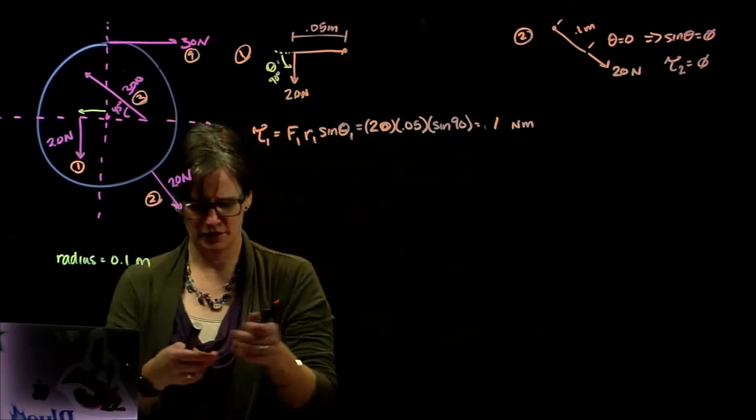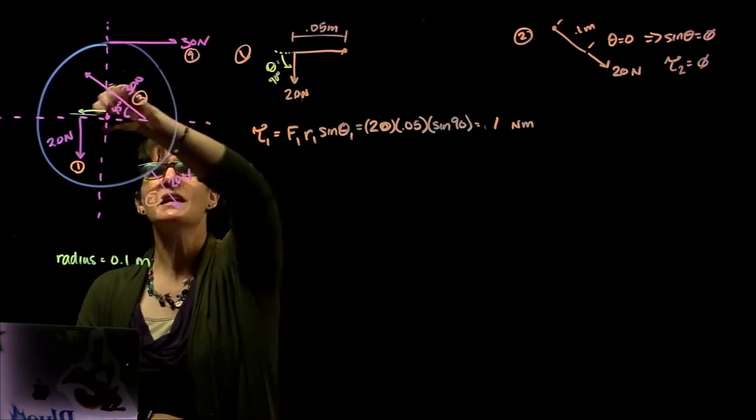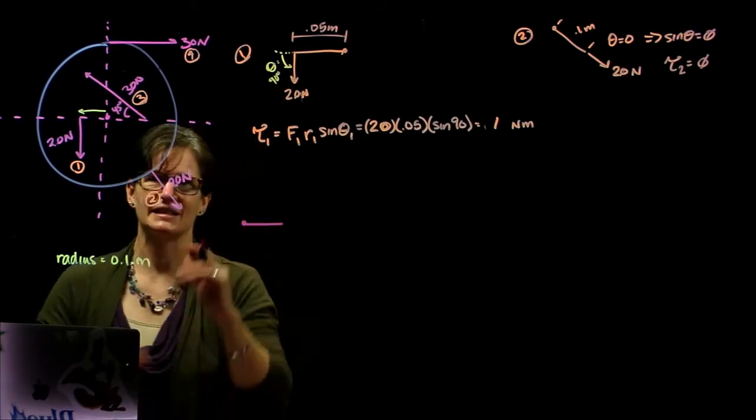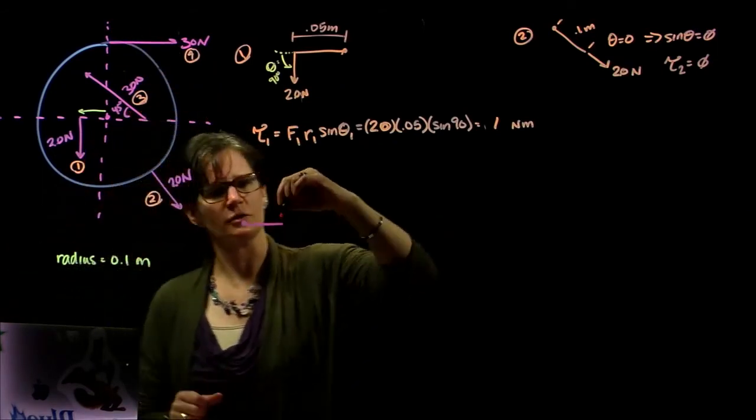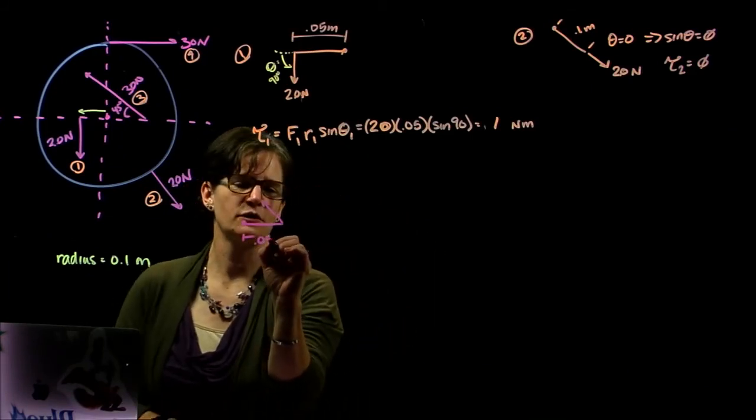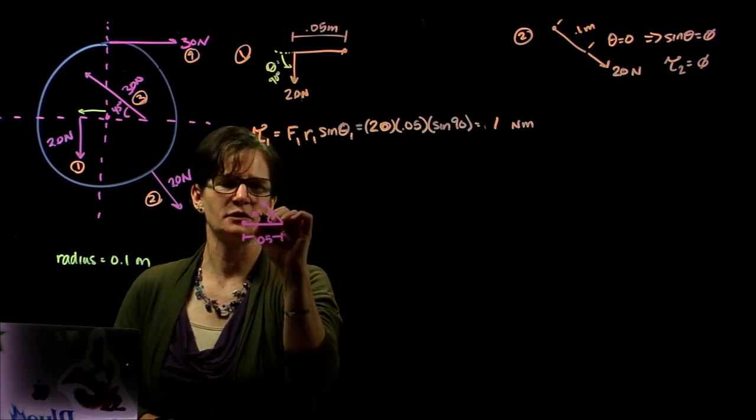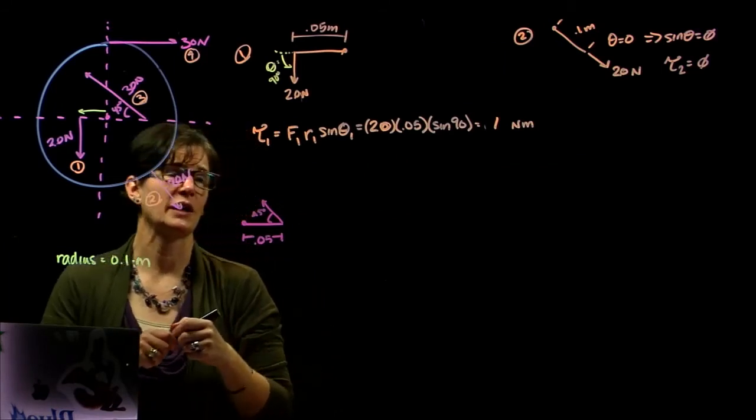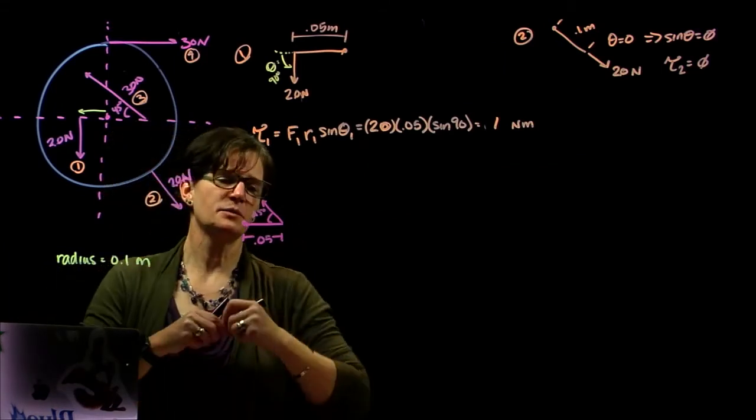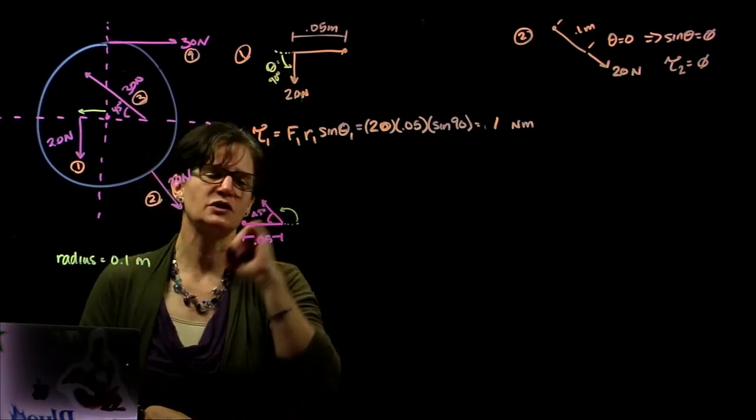What about force number three? This, similar to force one, is acting on the disc as if it were in that horizontal plane, and it too is acting at 0.05 meters. This angle is 45 degrees. When we look at the radius is 0.05, and as we look at the angle, we extend that radius and curl to the force. If this is 45 degrees, this is 135 degrees, so 180 minus that 45.